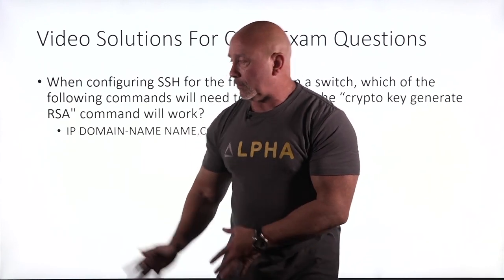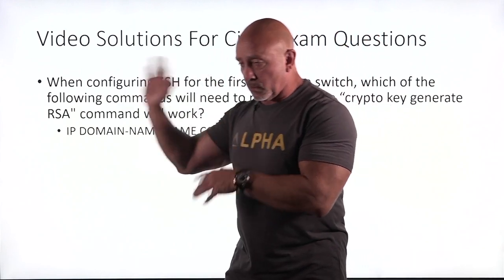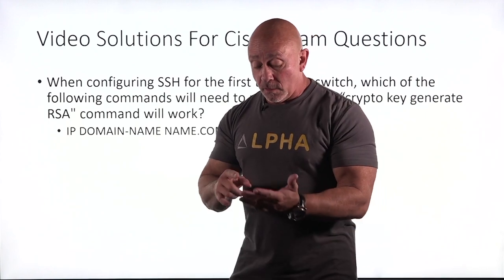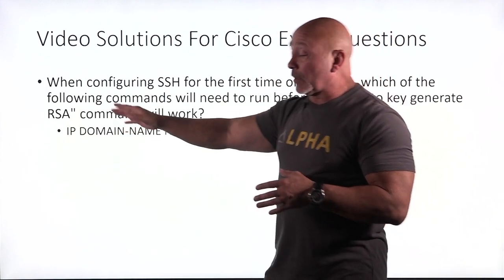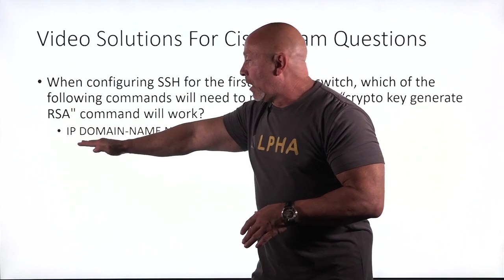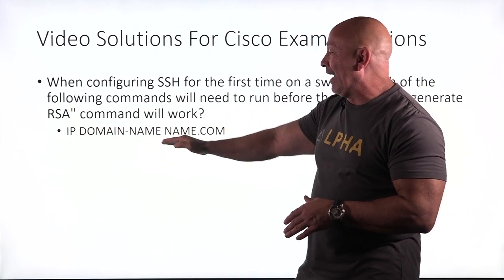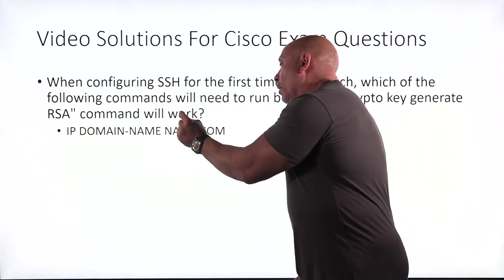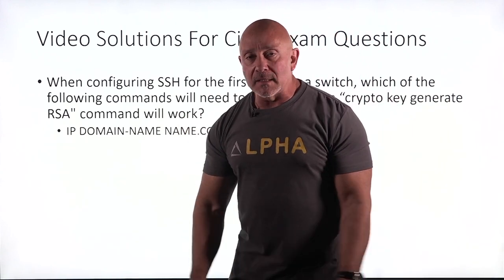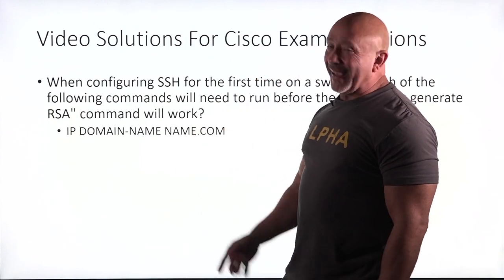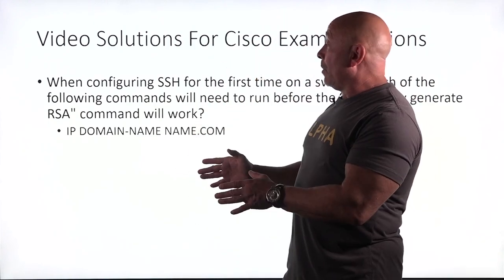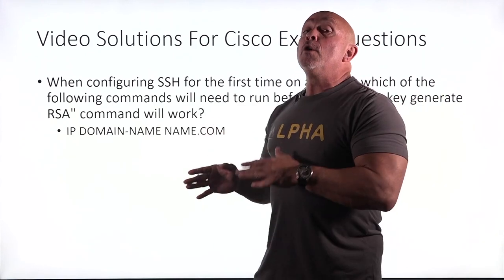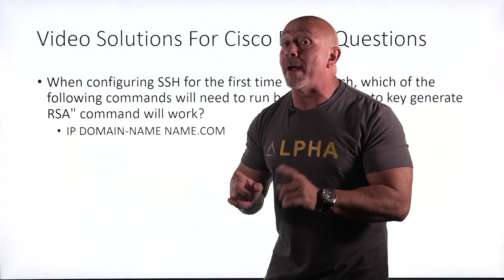Remember that I showed in one of the previous questions — I had the whole configuration for it. You know your router needs to have a hostname. Now, the answer based on the multiple choice questions: you must have a domain name — Cisco.com, last.com, whatever.com, your-mama.com — it doesn't matter. You have to have a domain name. But remember, when you're configuring SSH, not only do you need a domain name, you need a hostname on the router as well.